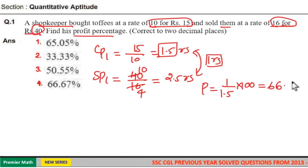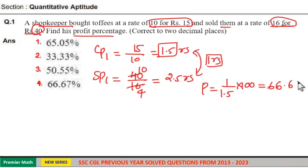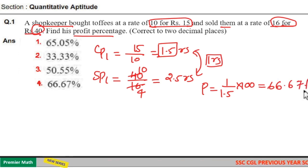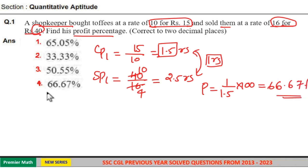15 goes 6 times in 100, so 66.66, which is equal to 66.67 percentage. Option 4 is your answer.